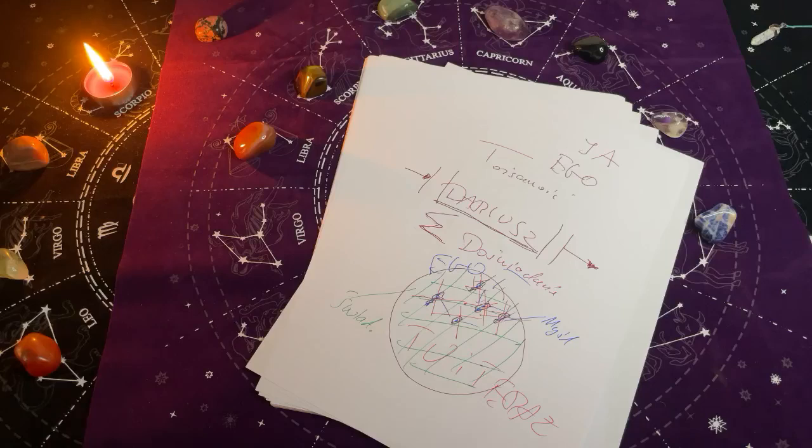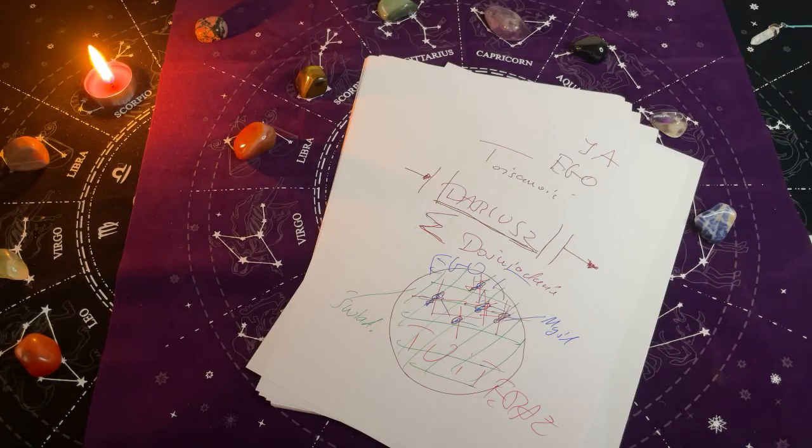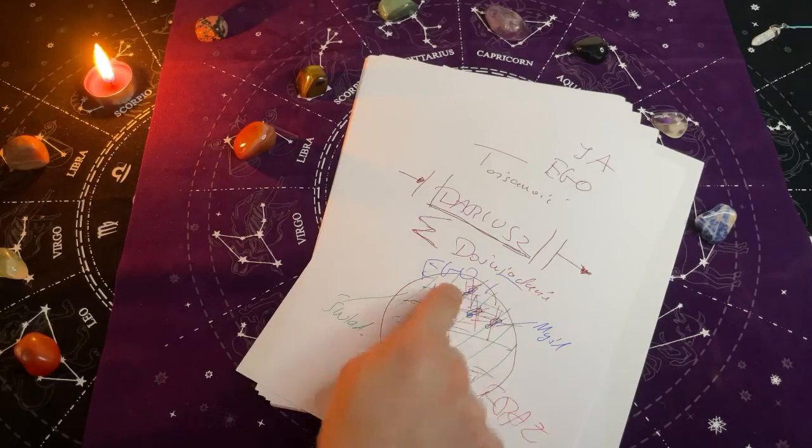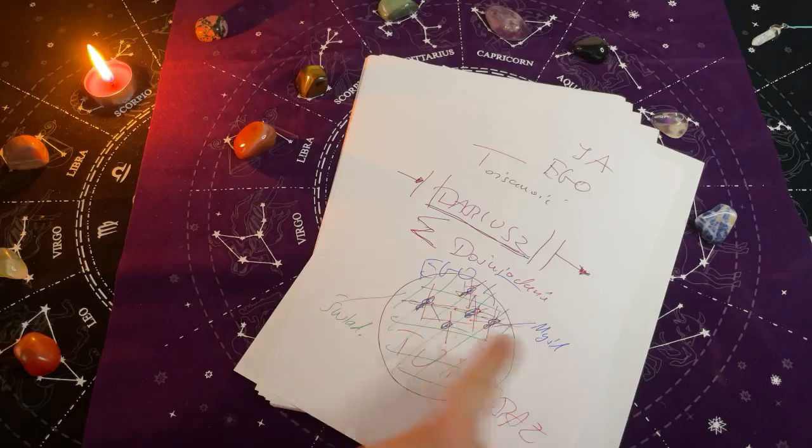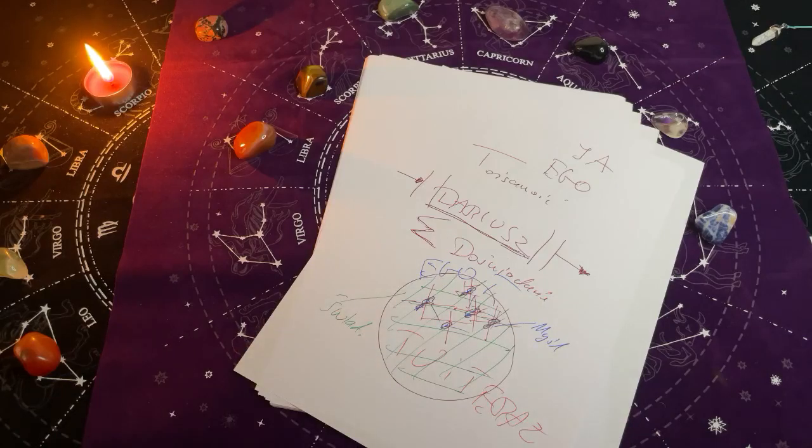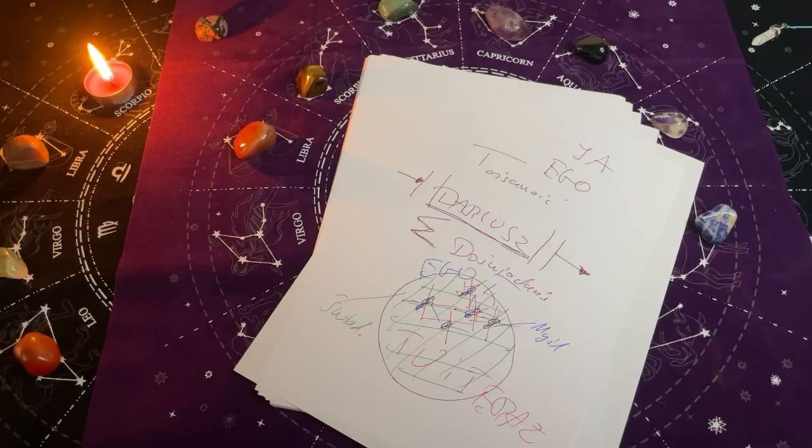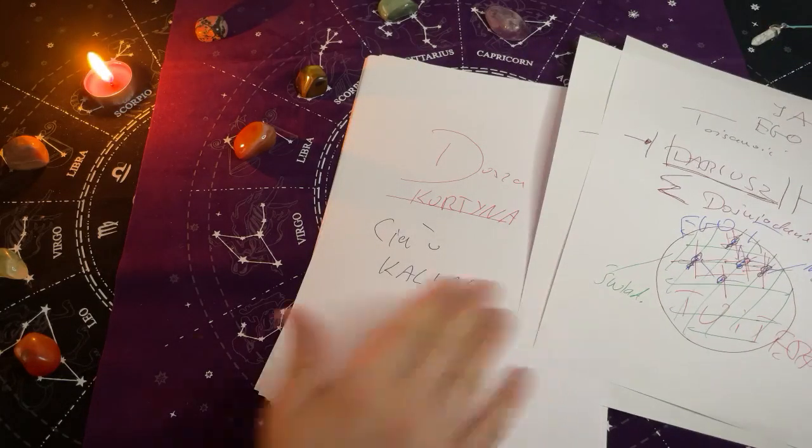Ty możesz być w ciele fizycznym czystą świadomością, bez myśli, bez ego, czystym istnieniem, prawdą. Więc to nie ciało jest tutaj złe, a umysł i jego konstrukcja, by tworzyć myślowe obiekty, które twoją świadomość rozdrobnią i wtedy umysł zaczyna nad tobą panować, bo ty jesteś wtedy rozbitą świadomością w milionach myśli i nie potrafisz poskładać się do kupy i odkryć, kim jesteś naprawdę. To jest ego. Wtedy umysł przejmuje świadomość, wtedy umysł walczy o przetrwanie.